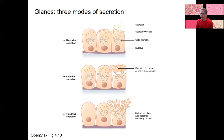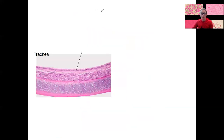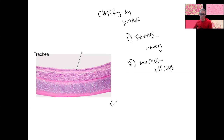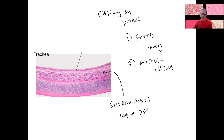The other way to classify glands is by the stuff they produce — the product. The two main general types are serous, which is watery fluid similar to blood plasma and sometimes contains enzymes, and mucous, which is more viscous — goblet cells are an example of mucous glands. There are also combination glands called seromucosal glands. These seromucosal glands are found deep to the pseudostratified columnar epithelium, also deep to some areolar tissue, and we'll see this type of gland as well.